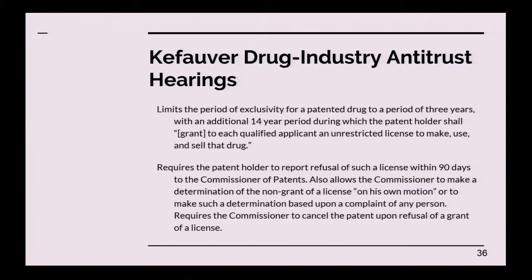After three years of exclusive use — patents lasted 17 years at the time — for the remaining 14 years the patent holder would be required to grant each qualified applicant an unrestricted license to make, use, and sell the drug. If they refused, they would have to report to the Commissioner of Patents, who could make a determination if someone complained they were not given a license. If the patent holder still refused, the patent would simply be canceled.